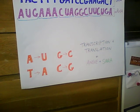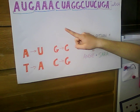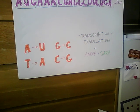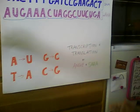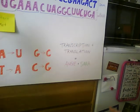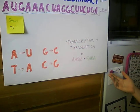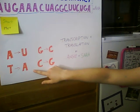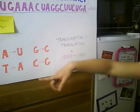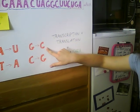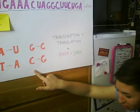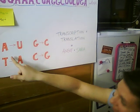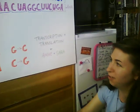We start first with the AUG, which is the start. And you may wonder what happened to all those T's. Right down here we have how the transcription happens: G's turn to C's, C's turn to G's, T's turn to A's, and then A's turn to U's.